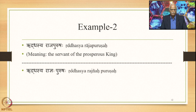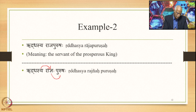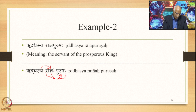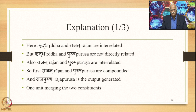Let us take another example: Ruddhasya Raja Purushaha, meaning the servant of the prosperous king. The vigraha is Ruddhasya Radneha Purushaha. Here Ruddhasya is linked with Radneha, and Radneha is linked with Purushaha. However, in this particular process, Radneha and Purushaha are compounded first, and therefore Ruddhasya, which is linked with Radneha, faces the similar problem of being termed Asamartha. Here Ruddha and Rajan are interrelated.